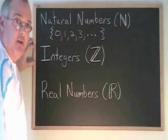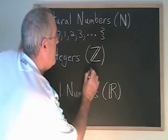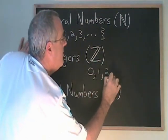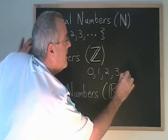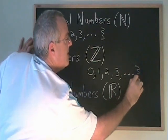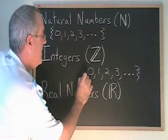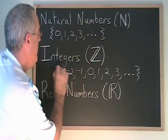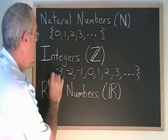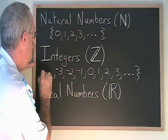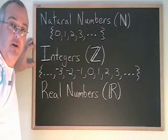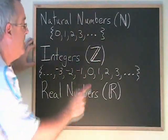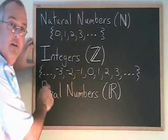Integers is very similar. You have 0, 1, 2, 3 going on and on in the positive direction, but you also have negative 1, negative 2, negative 3 going on and on in the negative direction. Integers includes the natural numbers and the negative whole numbers too.